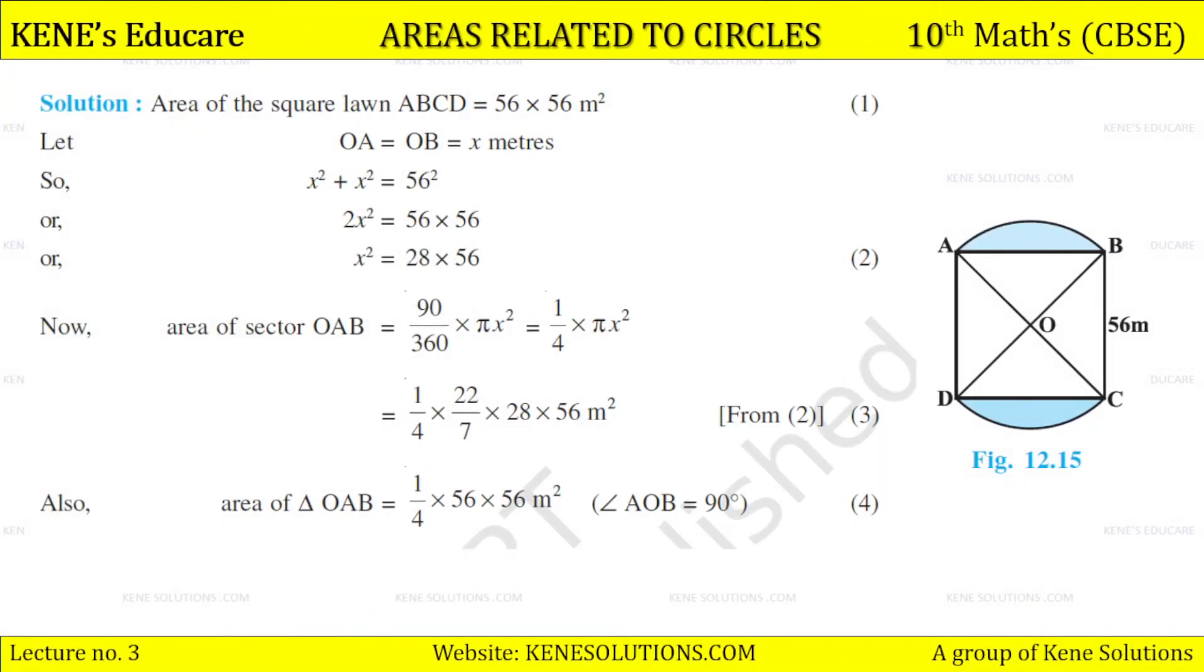So the solution. See here, area of the square lawn ABCD is equal to 56 × 56 m². We get OA = OB = x meters. So x² + x² = 56². Therefore, x² = 28 × 56. Now, area of sector OAB: 90/360 × πx², so 1/4 πx² here.